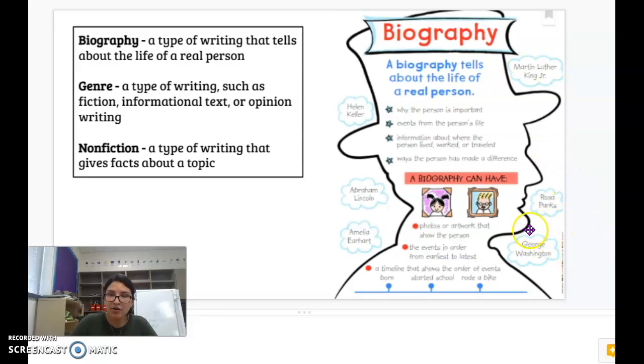Sometimes biographies have photographs taken with cameras, and sometimes they don't. They just have artwork that was drawn. Sometimes they have both. In today's biography, I believe it has a photograph. So we also might see events in order from the earliest to latest. So you might see and read about that person's childhood to when they're a little bit older until when they're an adult. Sometimes we'll see a timeline at the end of the book.